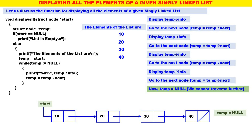Very simple. When start is equal to null, nothing is there in the linked list — list is empty. Otherwise, initialize temp to start. While temp is not equal to null, two things you have to do: display temp of info and move temp to the next node, until temp becomes null. That's all. I think this logic is quite simple and you should be able to easily manage this logic.